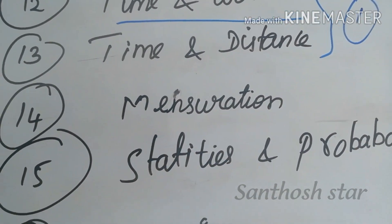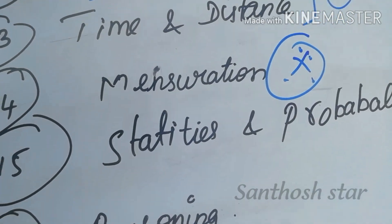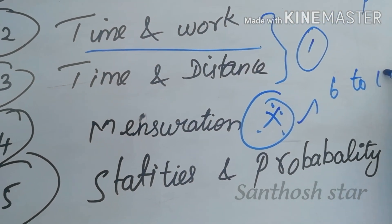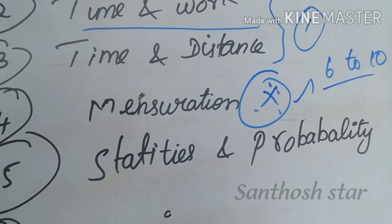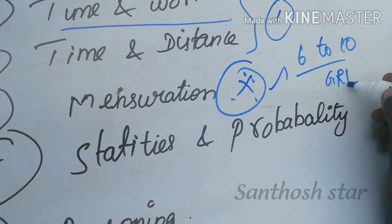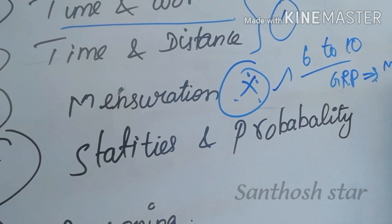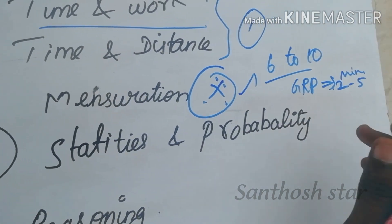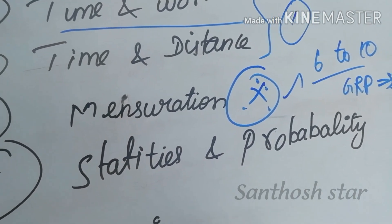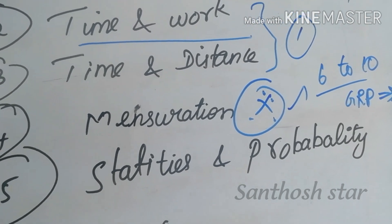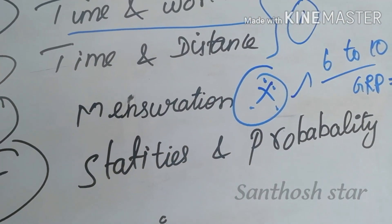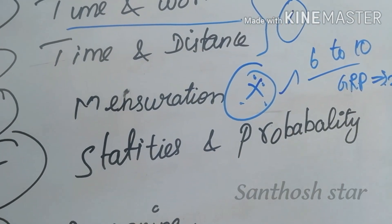The next topic is a very important topic: Mensuration. Why is this an important topic? If you have a school book, from 6th to 10th, the common topic is Mensuration. All the groups have a minimum of 4 to 5 questions. You can use the same topic for Mensuration. Basically, it is a very important topic. All books include Mensuration topics.